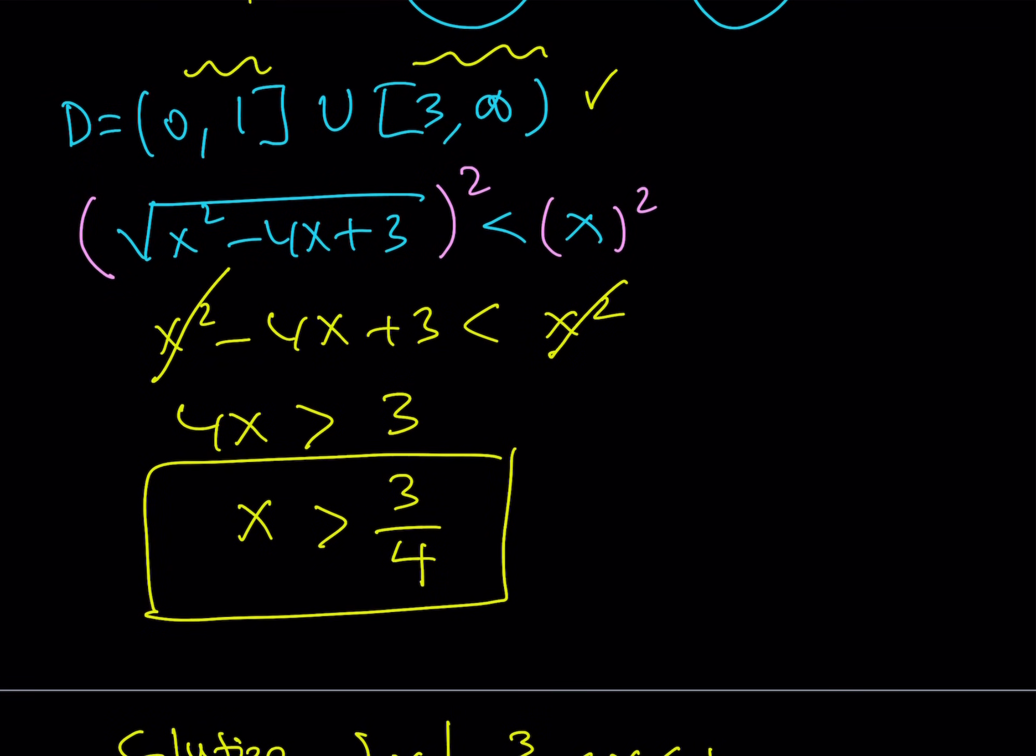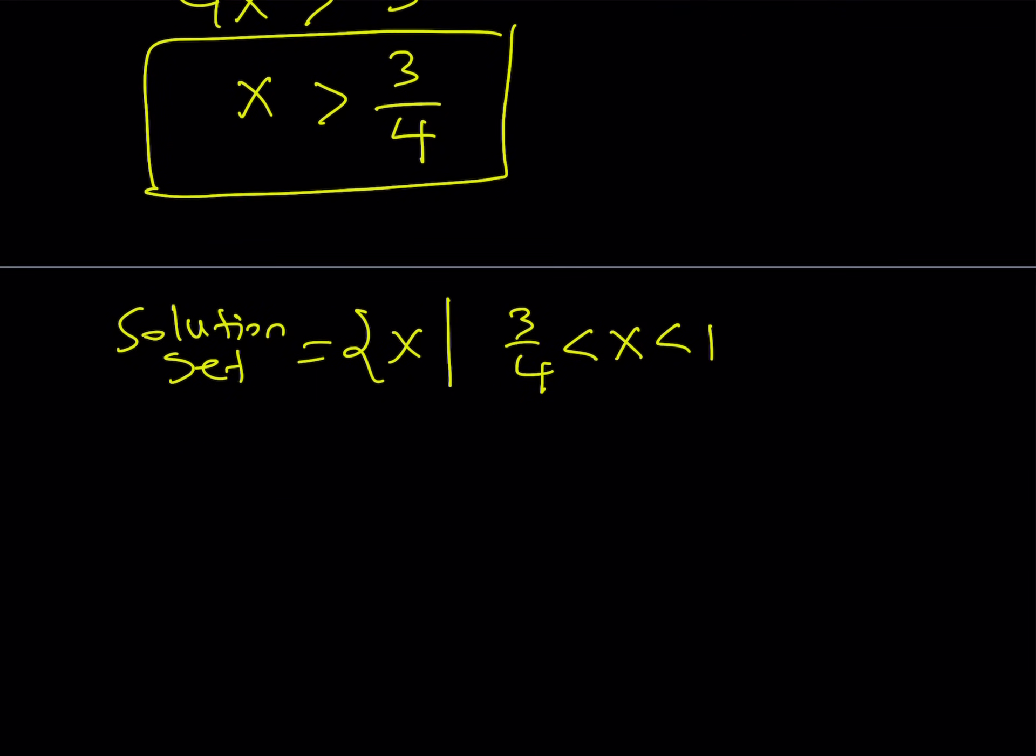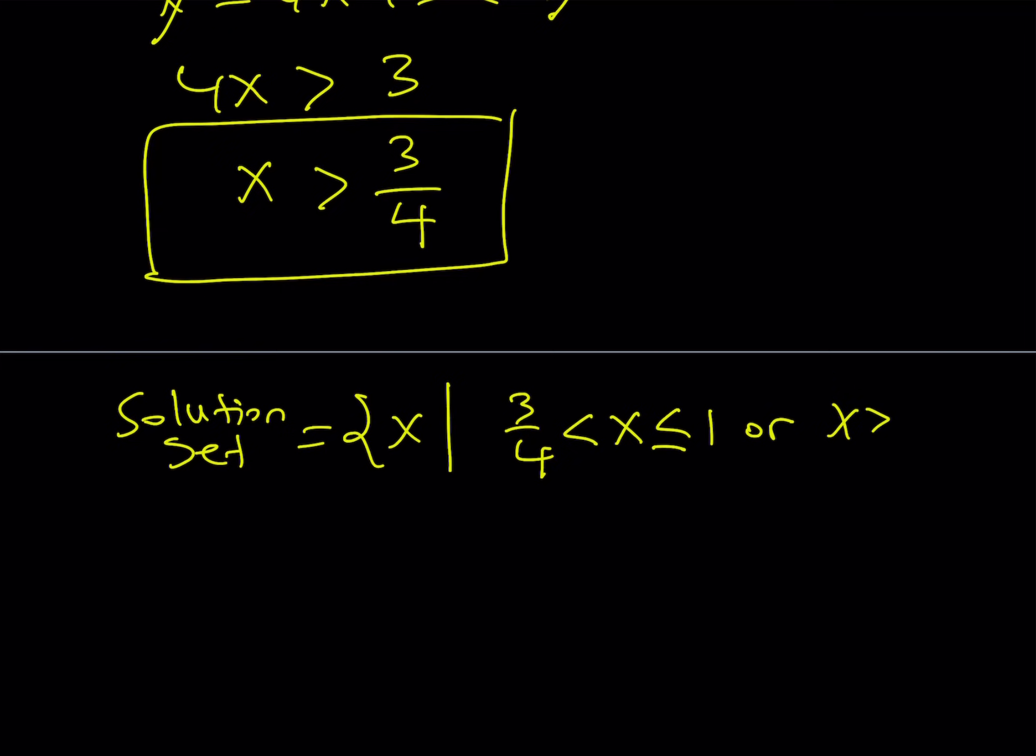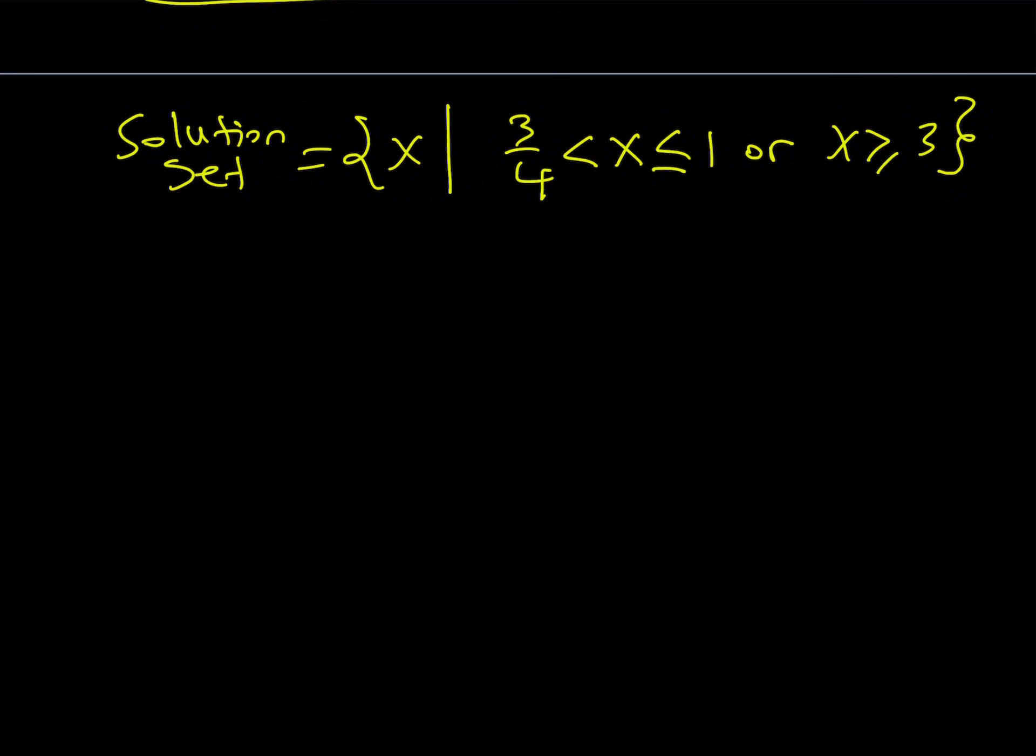And remember, 1 was included. So I'm going to include the 1. Or, x is going to be greater than or equal to 3. Why did we have to cut it like this? Because the solution does not completely overlap with the domain of the function. And, this brings us to the end of this video. Well, thank you for watching. I hope you enjoyed it.